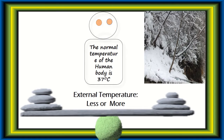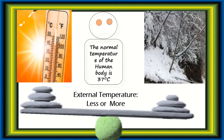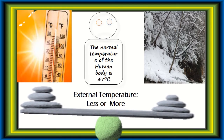نارمل temperature جو ہے — the normal temperature of the human body is 37 degrees centigrade۔ اگر 37 degrees سے temperature بہت زیادہ کم ہو جائے تو انسان بیمار ہوتا ہے، موت واقع ہو سکتی ہے۔ اگر temperature بہت زیادہ بڑھ جائے تو بھی یہ انسانوں، جنوروں اور پودوں کے لیے نقصاندہ ہے۔ اس لیے سردیوں میں ہم temperature برقرار رکھنے کے لیے گرم کپڑے پہنتے ہیں اور گرمیوں میں AC اور پنکھے استعمال کرتے ہیں تاکہ body temperature 37 degrees کے قریب رہے۔